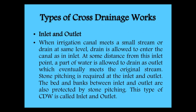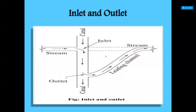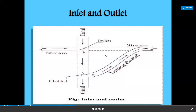Looking at the inlet and outlet figure: this is the canal, and a small stream enters here at the inlet and exits here at the outlet. The drainage enters the canal and leaves after some distance. With this arrangement, we can avoid the construction cost of a separate crossing structure for a small stream.